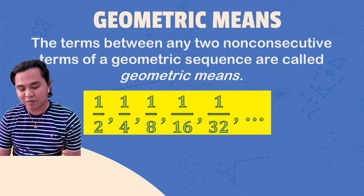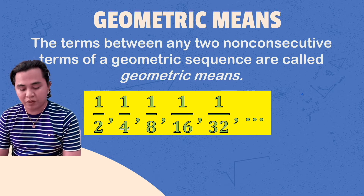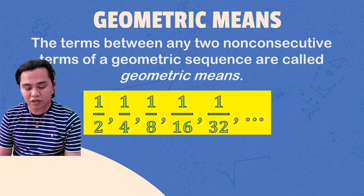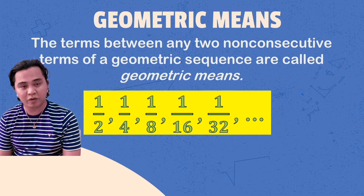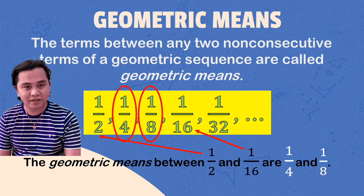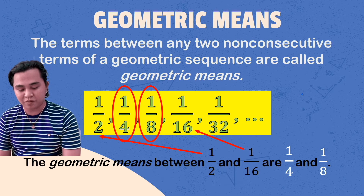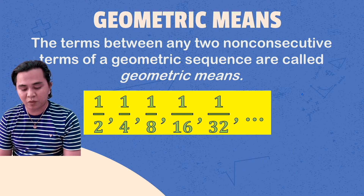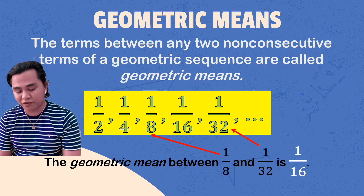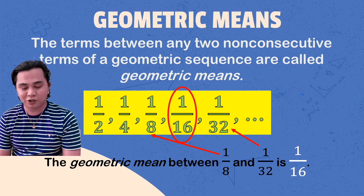We have here an example of a geometric sequence: 1/2, 1/4, 1/8, 1/16, 1/32. For example, the geometric means between 1/2 and 1/16 are 1/4 and 1/8, as long as the terms are between all the non-consecutive terms. Between 1/8 and 1/32, the geometric mean is 1/16. So that's how we illustrate geometric means.